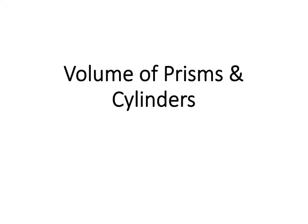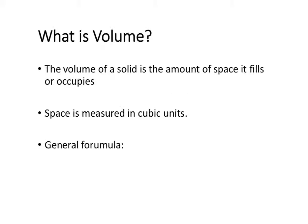In this video, we're going to have a look at how to calculate the volume of prisms and cylinders. The volume is the amount of space that is within a 3D solid shape. Unlike area, when we are measuring volume, we measure it in cubic units of measurement. So that could be millimeters cubed, centimeters cubed, meters cubed, or kilometers cubed.